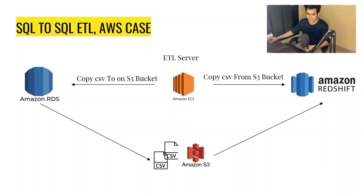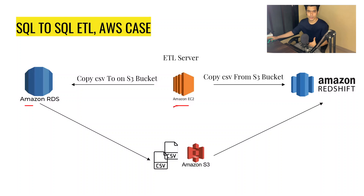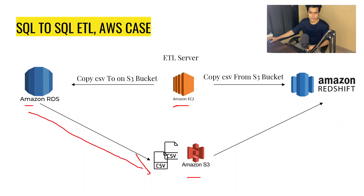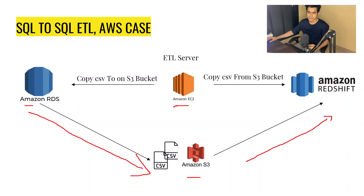Now let's understand the same concept on AWS. We have AWS RDS — let's say this is our Postgres server. In between we have an AWS EC2 machine, which is basically any computer hosted online, and we'll be doing a practical on it. We're going to copy data from the RDS server, store it onto S3 as a CSV file, and then use a COPY command to load that data into AWS Redshift. That is your entire ETL pipeline.